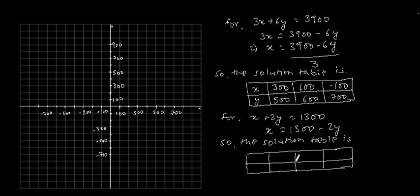Again by putting a random value for y, we need to find out x. By putting y = 500: 2 × 500 = 1000, so x = 1300 - 1000 = 300.